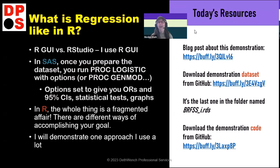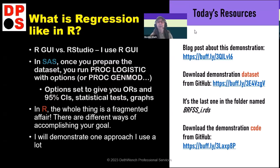In R, the whole thing is a fragmented affair. Once you get to R, you're kind of duct-taping the whole thing together — like creating a Rube Goldberg pipeline to do what SAS just does for you. The bad news is creating a pipeline means you've got to tape together a whole bunch of pieces. The good news is you get to shop for each of those pieces and pick your favorites — there are a lot of options. So that's why I'm showing you this presentation today: to show you how I do mine.